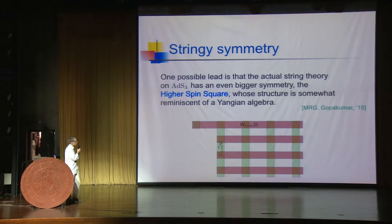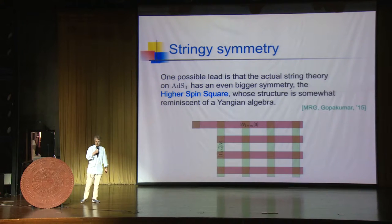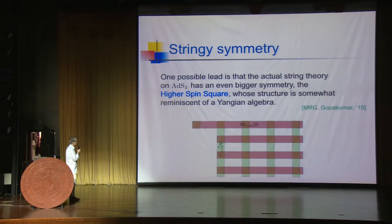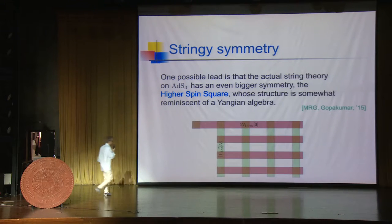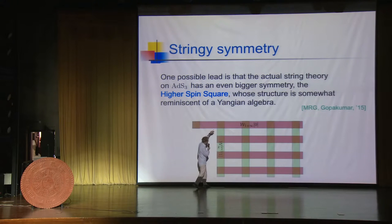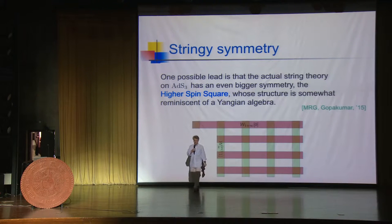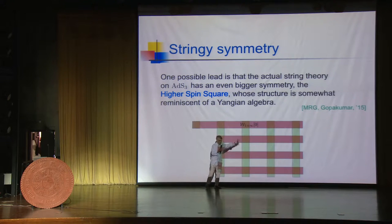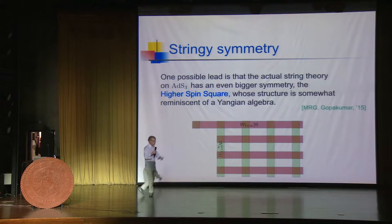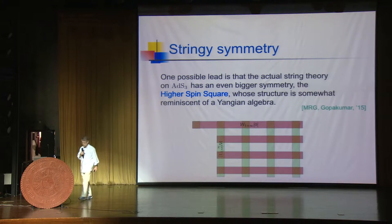One possible lead about where this Yangian symmetry may come from is that the actual string theory in AdS3 has an even bigger symmetry than just this W-infinity algebra. This is what Rajesh and I coined the higher spin square: an algebra where you have a W-infinity algebra, but the actual symmetry currents of the symmetric orbifold also contain infinitely many representations of this W-infinity algebra. Think of this as the level zero part of a Yangian, with level one coming next, and then recursively by taking commutators you generate the full Yangian-type symmetry.